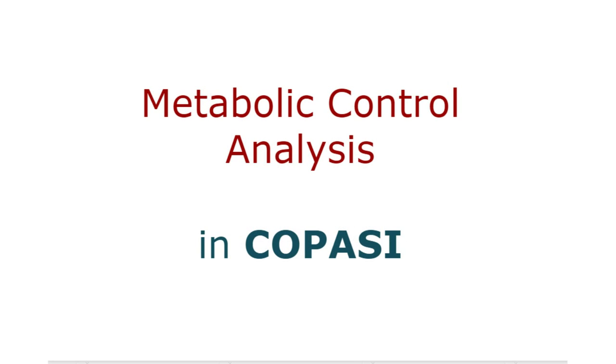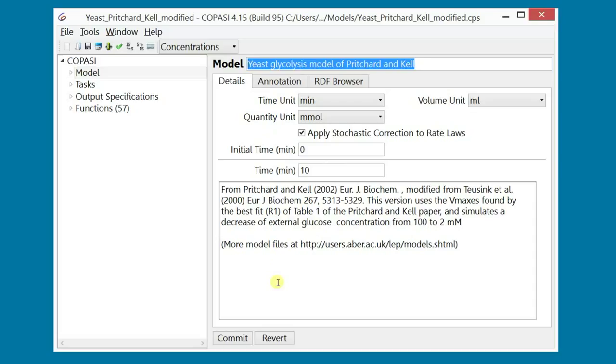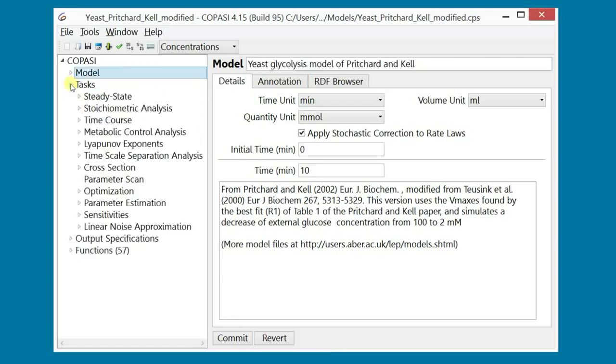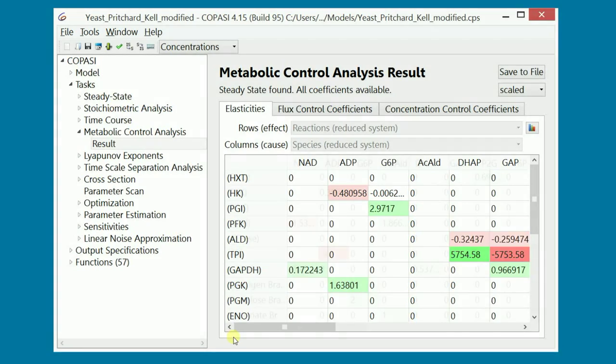Now, let's perform a metabolic control analysis in COPASI. For this example, I use a modified version of Pritchard & Kell's model of yeast glycolysis. You can download the original model from JWS Online or BioModels. To calculate the control coefficients in COPASI, we select Metabolic Control Analysis from the task sub-tree and click Run. This is the result of our analysis.